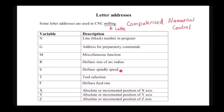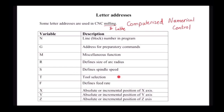S defines the spindle speed. Spindle speed means, in the case of a milling machine, the speed at which the tool is rotating. In the case of a lathe machine, it is the speed at which the workpiece is rotating. T is for tool selection — whatever tool number you need to select, you have to use the code T. F is for defining the feed rate. Feed rate means the speed at which you are doing the job — not the speed of the spindle, but the speed at which you are moving the mill bit in the X axis, Y axis, and Z axis. In the case of lathe, the speed at which you are moving the tool into the object or along the object.